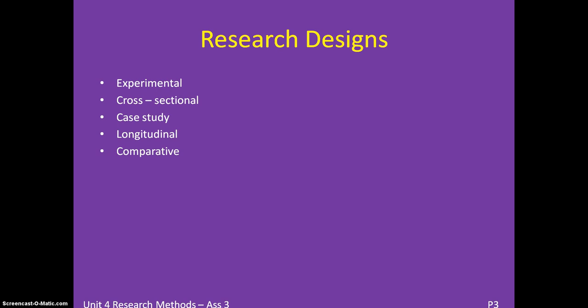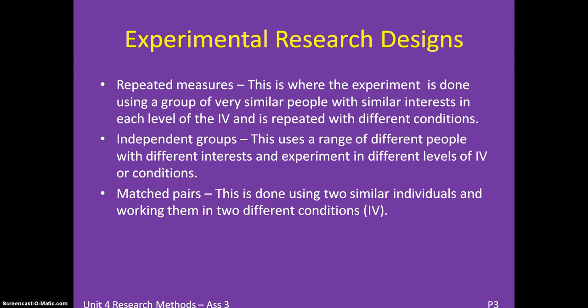Experimental Research Designs — there are three different types: Repeated Measures, Independent Groups, and Match Pairs. Repeated Measures is where the experiment is done using a group of very similar people with similar interests, such as the same class or 17-year-old males who play football. Each level of the independent variable represents a different condition, so you change the independent variable and measure how that affects the dependent variable.